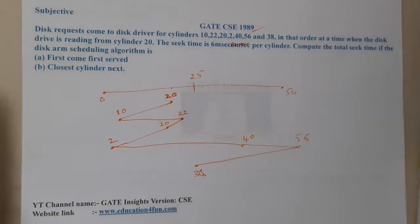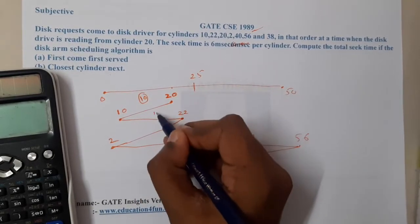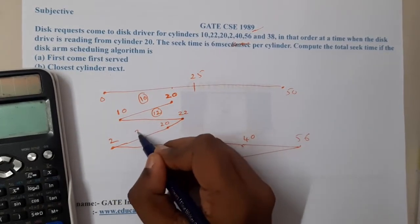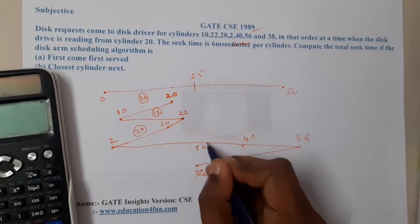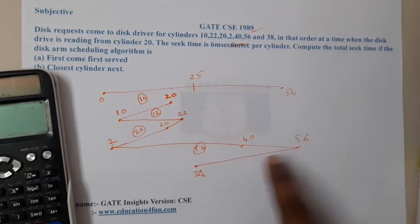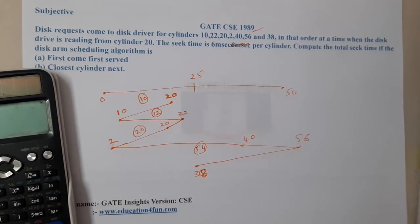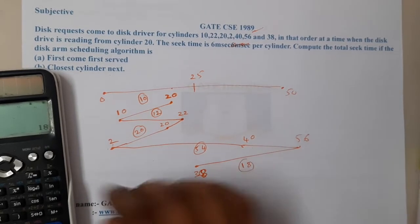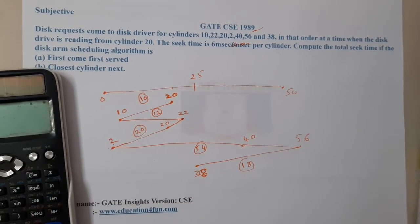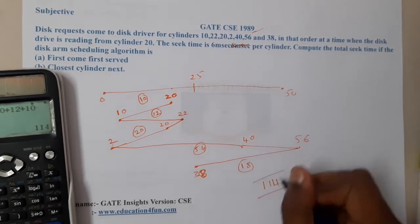Now let's calculate the distances. From 20 to 10 is 10. From 10 to 22 is 12. From 22 to 20 is 20 total so far. From 20 to 2 is 56 minus 2, that is 54. From 2 to 40 is 54. From 40 to 56 is 34. From 56 to 38 is 18. Total: 18 + 54 + 20 + 12 + 10 = 114.